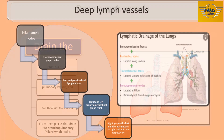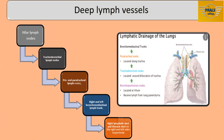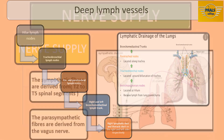The hilar lymph nodes drain into the superior and inferior tracheobronchial lymph nodes, located superior and inferior to the bifurcation of the trachea respectively. These nodes in turn drain into the pre- and paratracheal lymph nodes, then into the right and left bronchomediastinal lymph trunks, which finally drain into the right lymphatic duct on the right and the thoracic duct on the left.